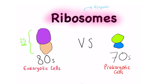Ribosomes generally have two subunits — a larger subunit and a smaller subunit. Each of these subunits contains ribosomal RNA and protein. Ribosomes are very small but are present in very large amounts in the cell, and their main responsibility is that they are the site of protein synthesis.